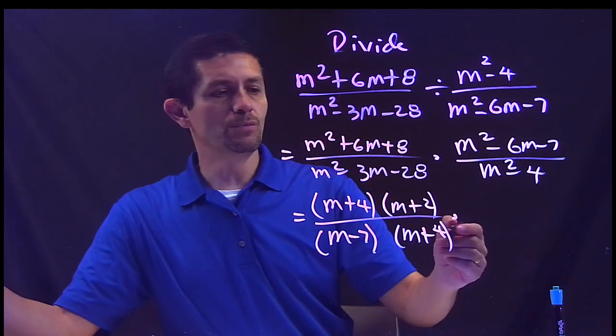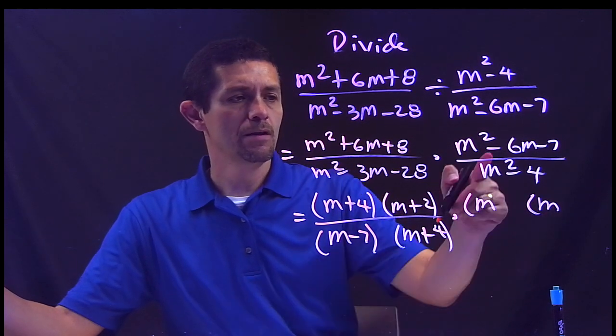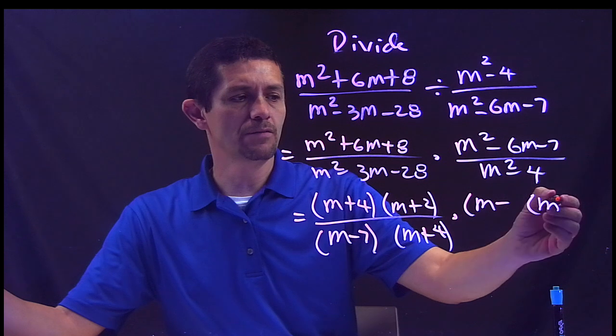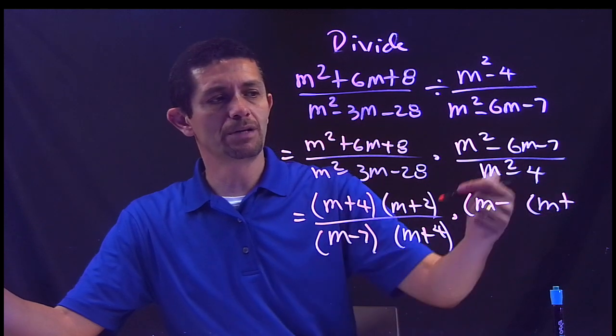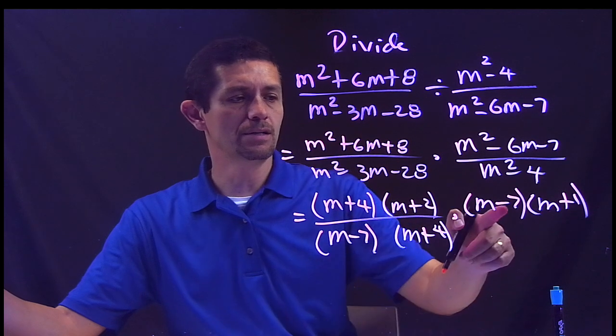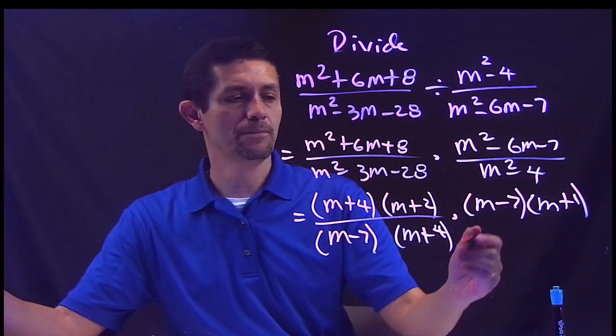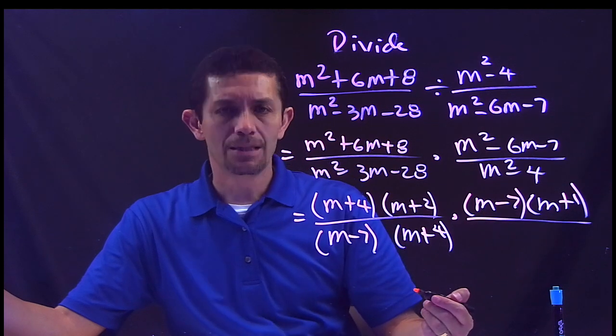Next trinomial: M and M, negative first, negative times negative is positive. Two numbers you multiply negative 7, and when you add or subtract you get 6. Negative 7 times 1 is negative 7, negative 7 plus 1 is negative 6.